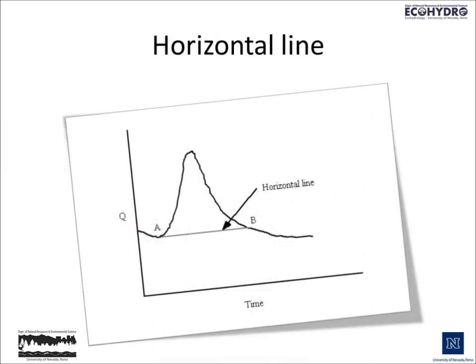The approach we're going to take in this course is based on the application of a horizontal line. We pick a base flow that was in effect prior to the storm and strike a line from the beginning of the storm flow to the point at which it intersects the hydrograph. We assume that everything above that line is caused by storm flow and everything below that line is attributable to base flow.